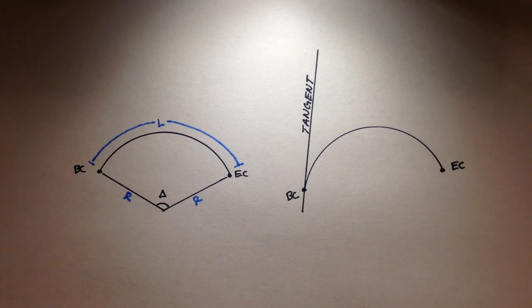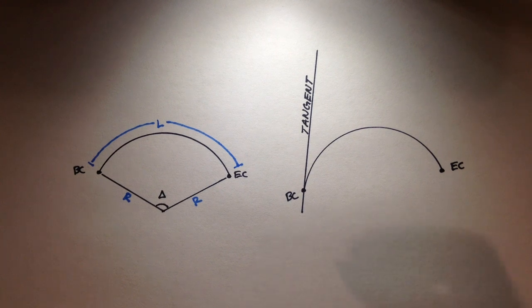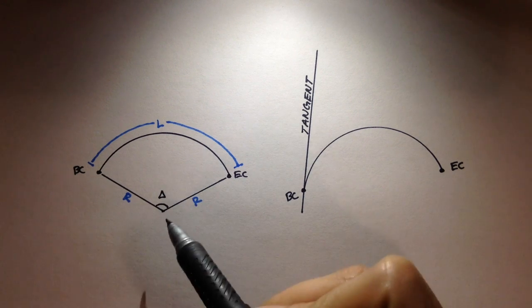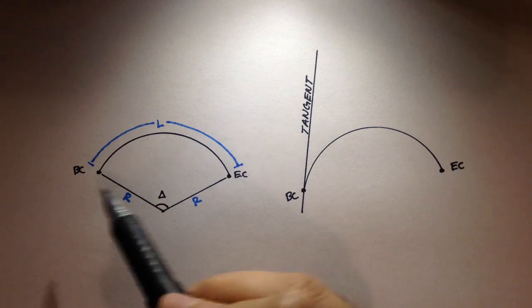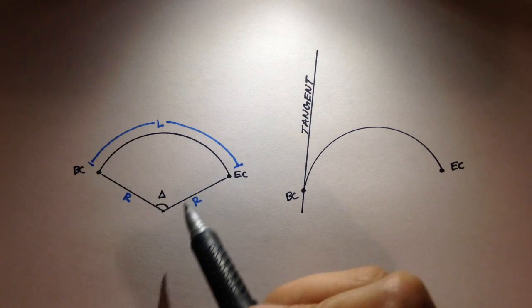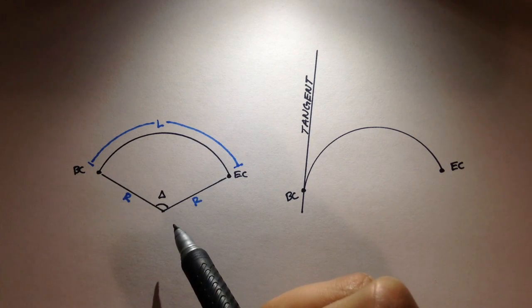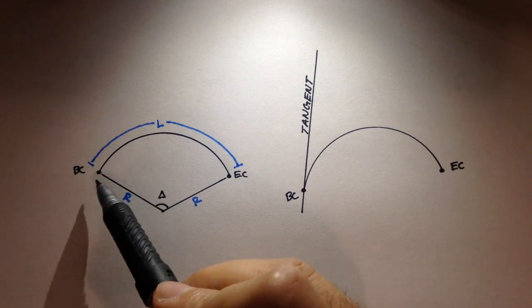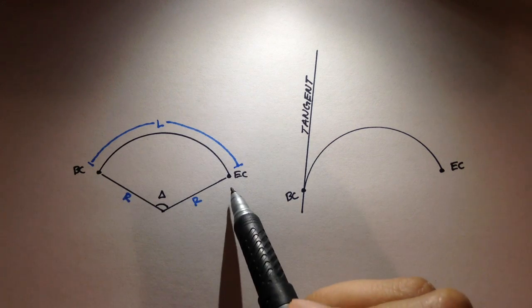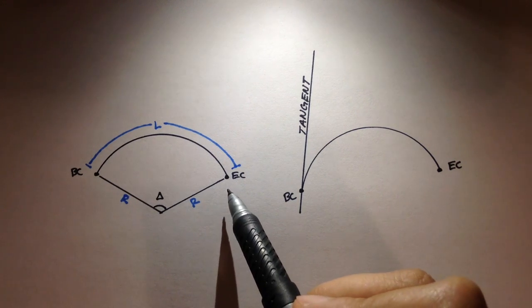When we design horizontal curves for roadways and highways, we usually know design parameters such as the radius, the length of the horizontal curve, the origin of the curve, and the locations of the BC and the EC.